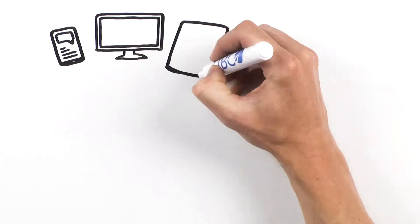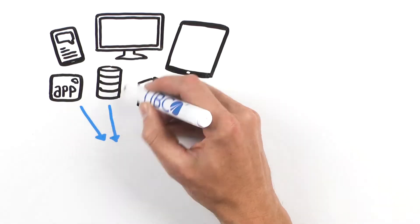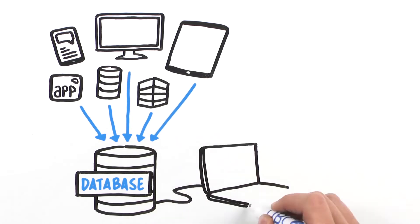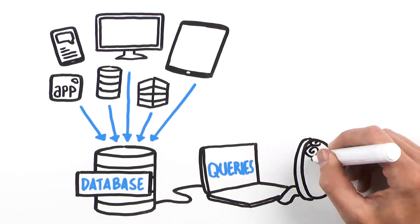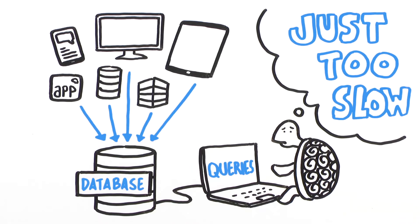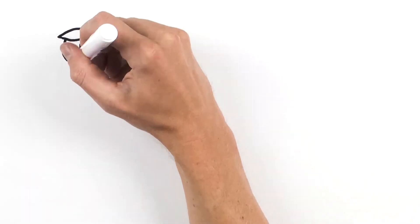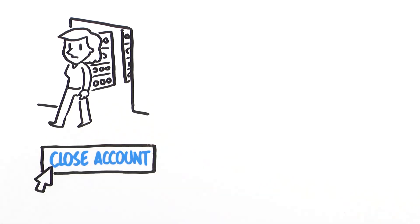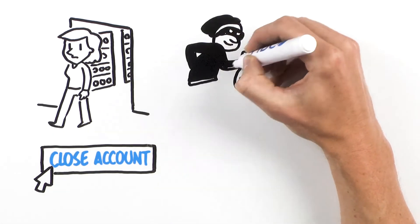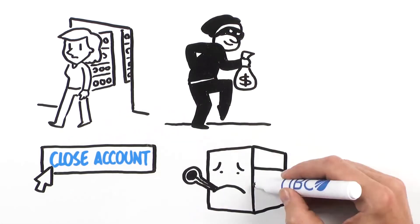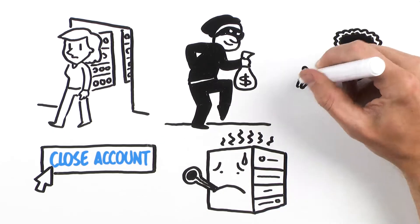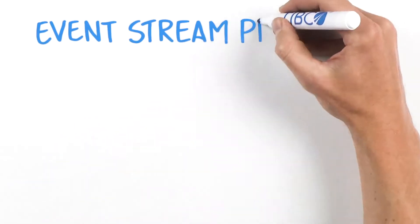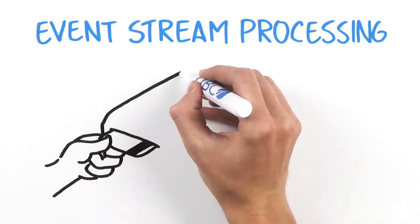Traditional data processing won't work because collecting information, storing it in a relational database or Hadoop cluster, and running queries on it to discover meaningful events is just too slow. In just a few minutes, the customer has already left your store or closed their account, fraudulent transactions have gone through, and the machine has started overheating. Your opportunity to influence the right outcome has slipped away.